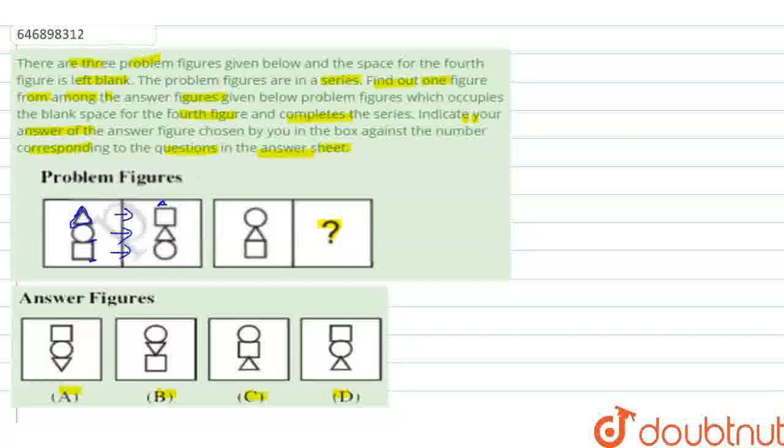In the third figure, we will also change it. We will put the circle on the triangle, and the triangle in the middle on the square, and the square on the triangle.